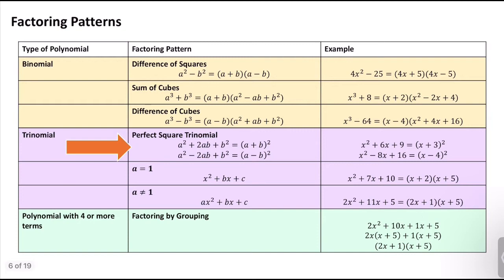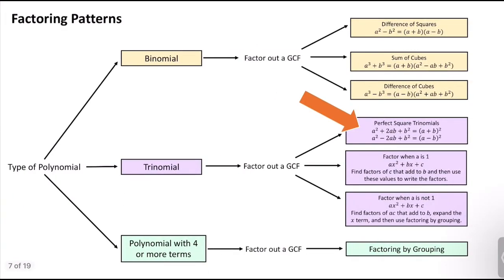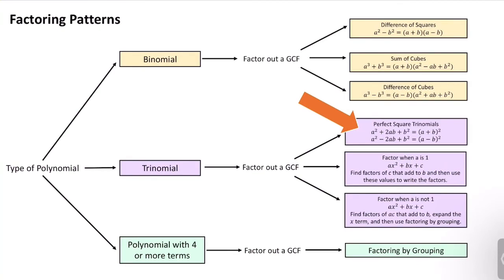Whenever we have a trinomial, this is one of those factoring patterns we can use. It's in your study guide of factoring patterns, and also in the flowchart. If we have a trinomial, once we factor out a GCF, we can check whether we can use the perfect square trinomial factoring pattern. You can also factor these trinomials using the a-is-one or a-is-not-one process — it's just that recognizing a perfect square trinomial makes it a little bit easier to use this pattern instead.